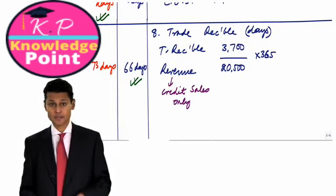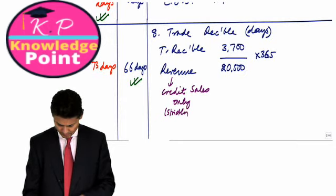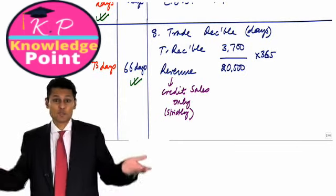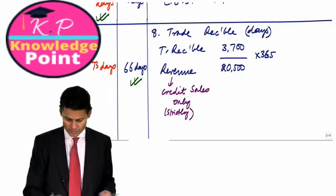One point of caution. Occasionally I've seen the examiner do this too. But it's very occasional. This must be credit sales only. Not cash sales. Strictly. Obviously in this question, where it's not specified, I'm going to assume the old credit sales is not a problem. So that's another ratio sorted.